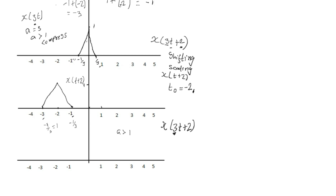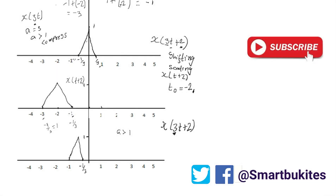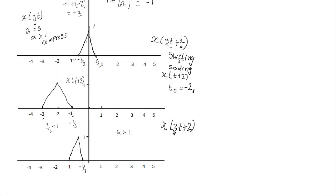After dividing, our signal ranges from minus 1/3 to minus 1 (i.e., minus 3 divided by 3). The amplitude remains 1, giving a compressed version of the shifted signal. We now have our X(3t+2) drawn.